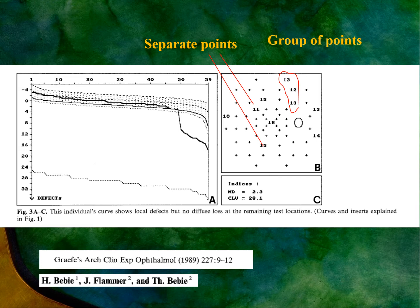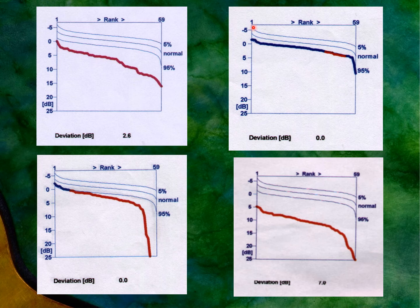One limitation of this test is that numbers are arranged regardless of whether they are grouped or isolated. In glaucoma, we usually require a group of at least three points to confirm significance, but isolated abnormal points still appear on the curve. When values are in the normal range, the line is shown in blue; if below normal, it is shown in red, indicating depression.